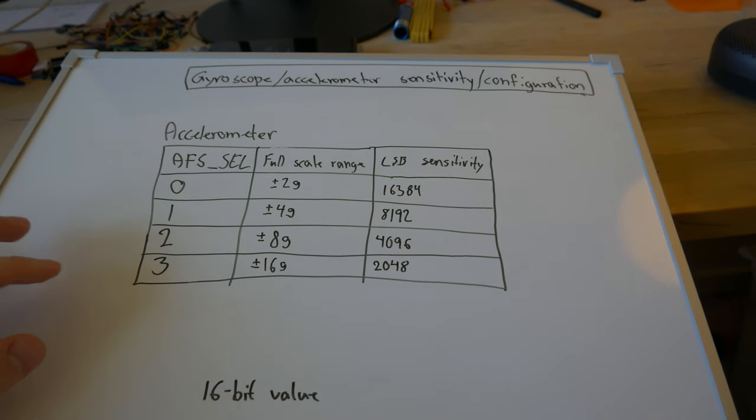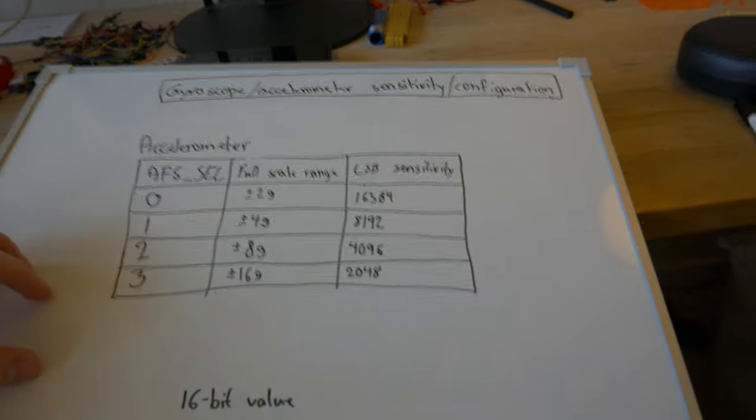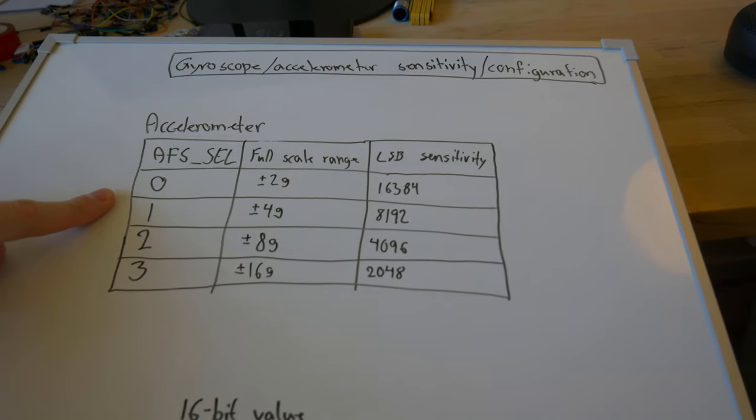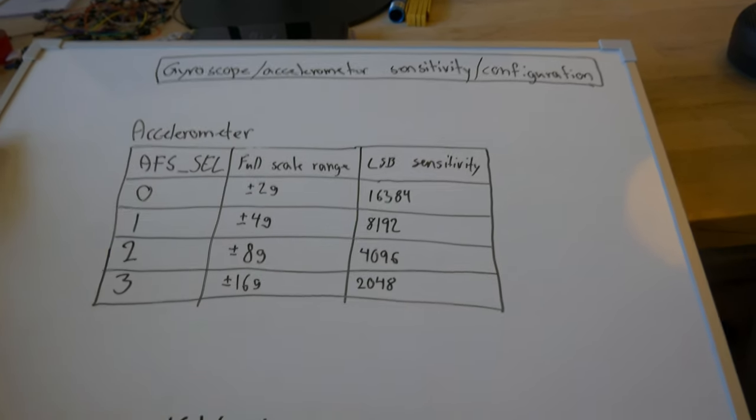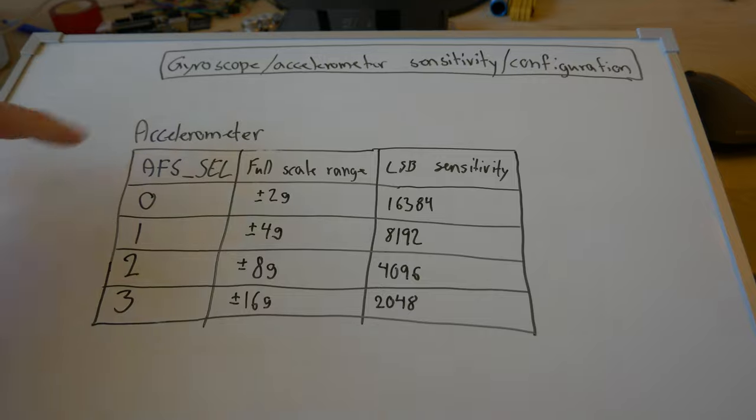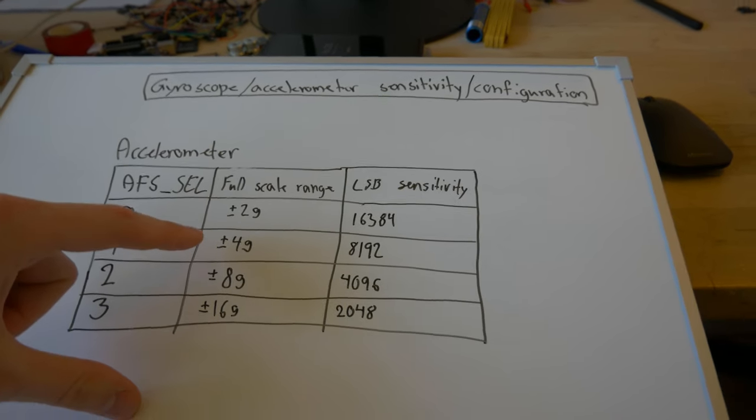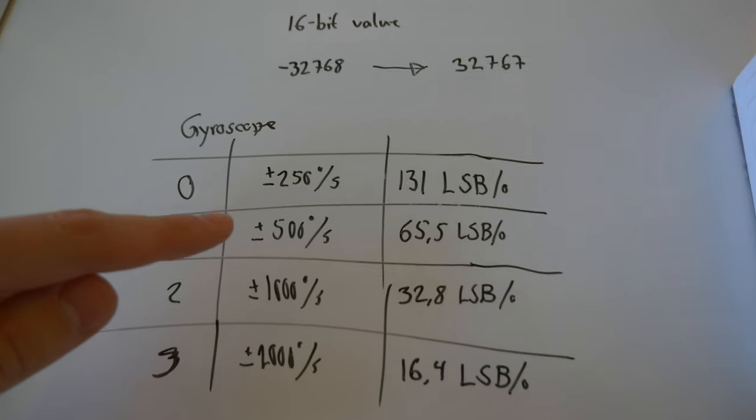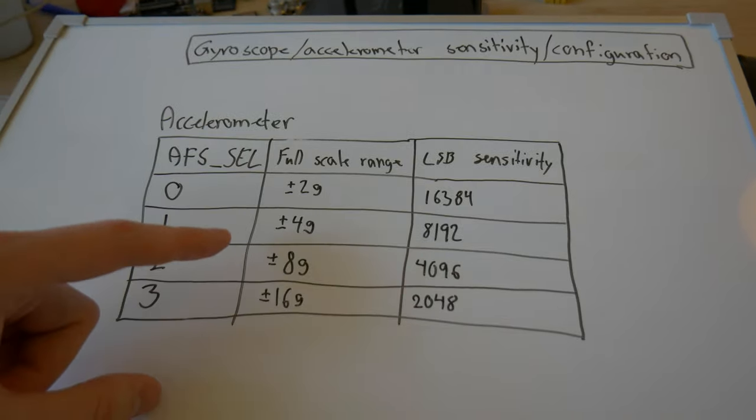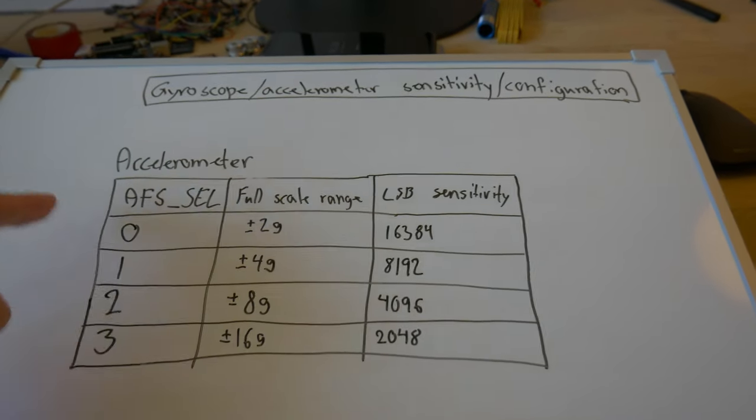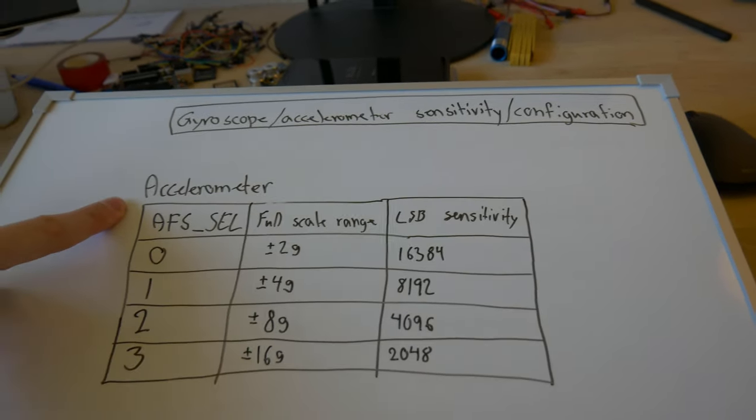The raw values that the IMU is outputting should be interpreted by these kinds of tables. When you configure your accelerometer you can configure it to have a specific scale. The same thing can be done with the gyroscope.